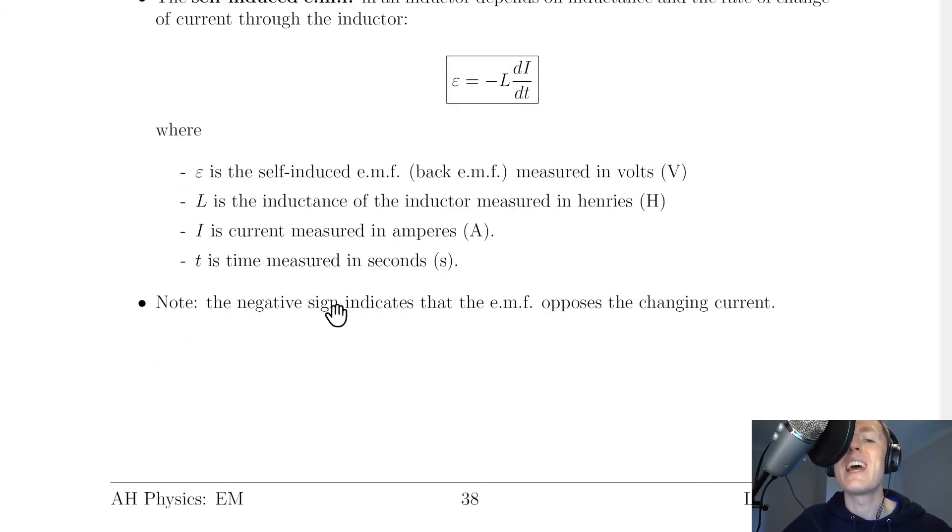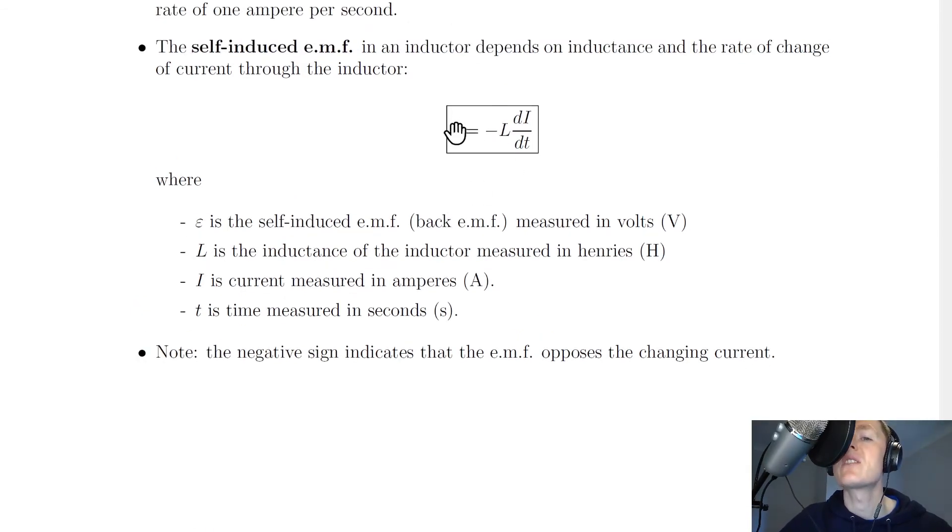Note that the negative sign indicates that the EMF opposes the change in current. So this negative sign indicates that the EMF is opposing this change in current dI/dt.